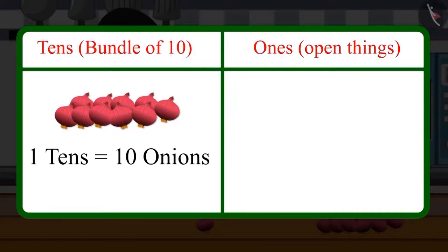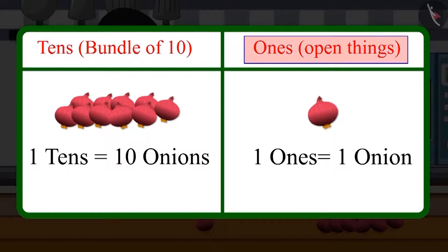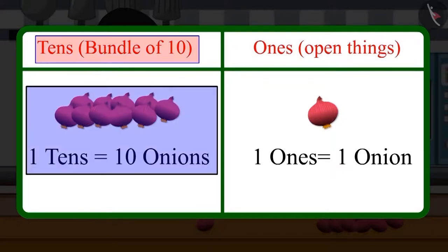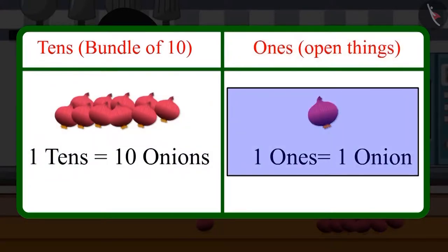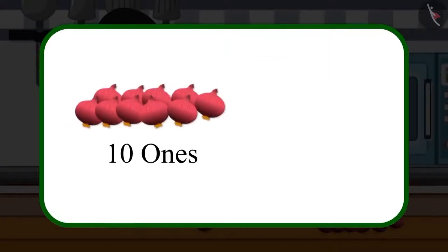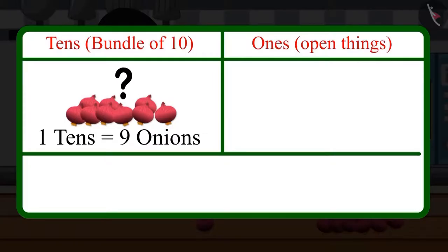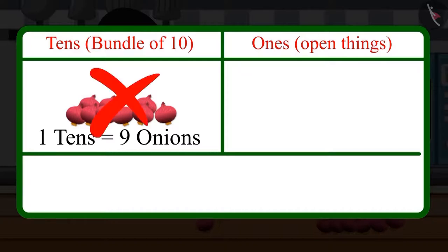...this group is called tens, and the open things are called ones. So ten means a group of ten, and ones means one — that is, the open things. When there are ten ones, then they make one tens. Choto, can nine onions together make one tens? No mommy, for this we will need one more onion — this will be nine ones.